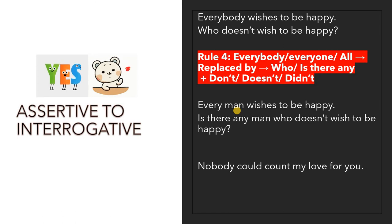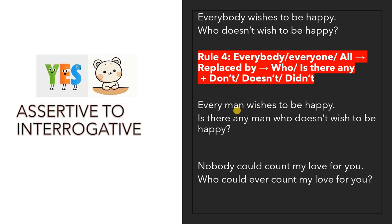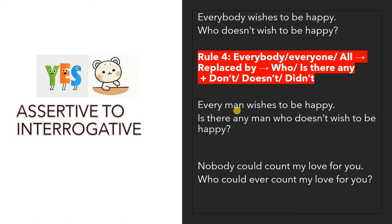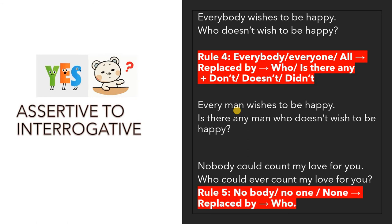'Nobody could count my love for you' becomes 'Who could ever count my love for you?' — it changes to interrogative. 'Nobody' refers to one person, so 'who' is used. 'Nobody,' 'no one,' or 'none' will be replaced by 'who.'